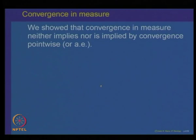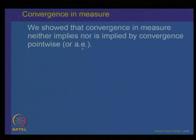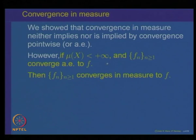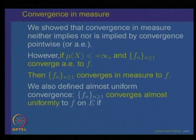In the previous lecture, we showed that convergence in measure neither implies nor is implied by convergence pointwise almost everywhere. That means if F_n converges to F in measure, it need not imply that F_n converges pointwise or almost everywhere. Conversely, if a sequence converges pointwise or almost everywhere, that need not imply convergence in measure. However, we proved that if the underlying measure space is finite and F_n converges to F almost everywhere, then it also converges in measure.